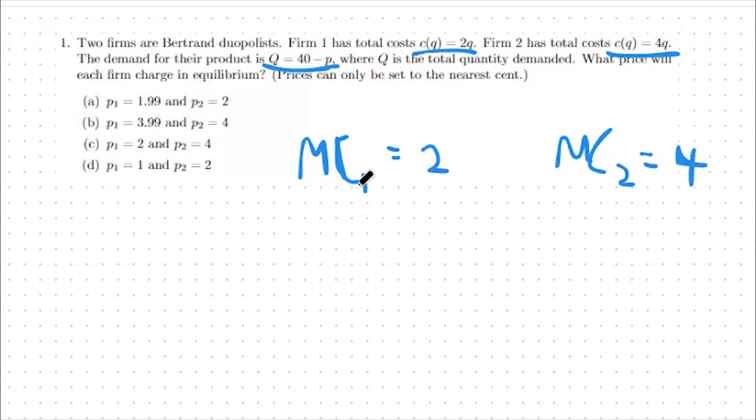As such, firm 1 should get the highest possible price available to them without going over four dollars. In this case, since we're able to price to the nearest cent, that would be three dollars and 99 cents.